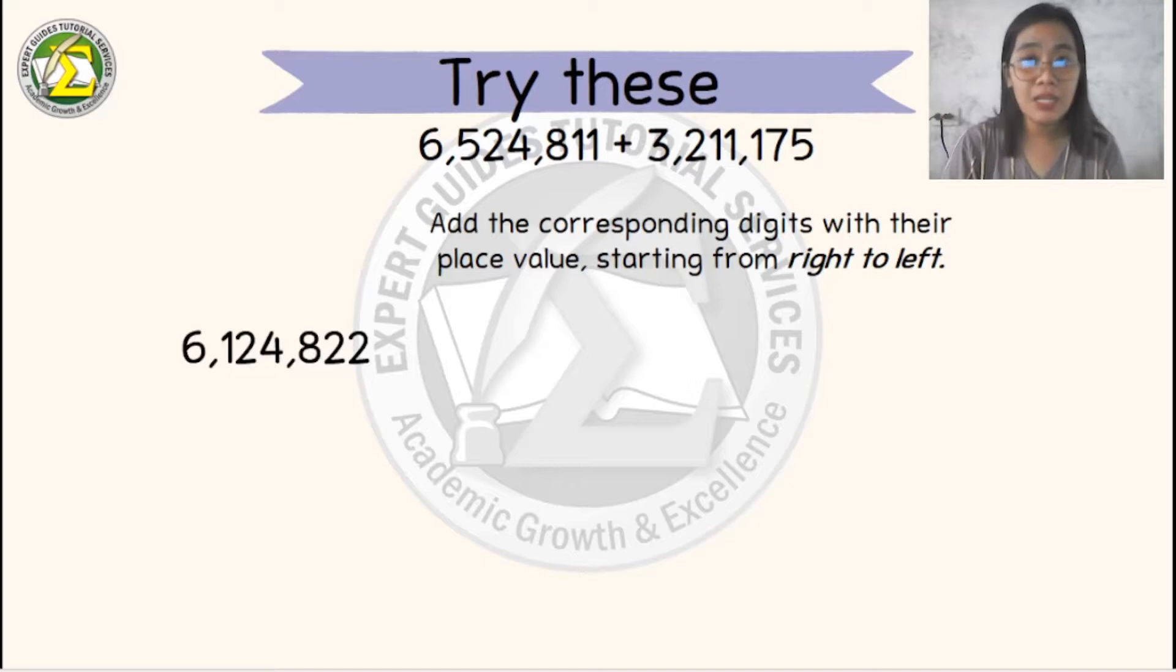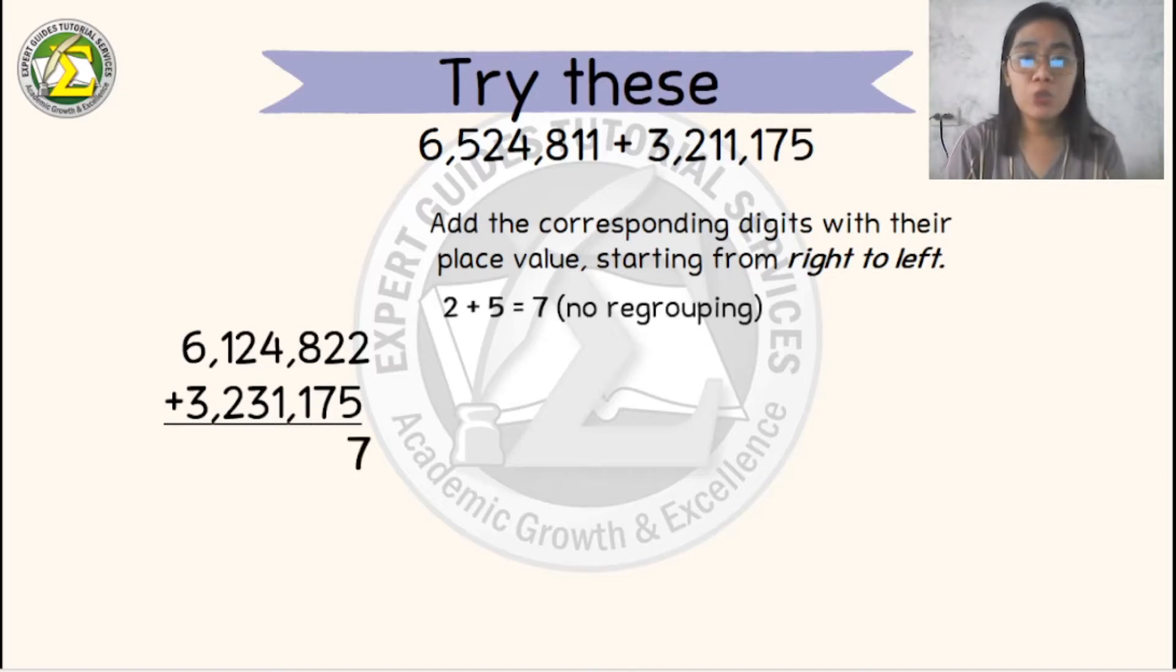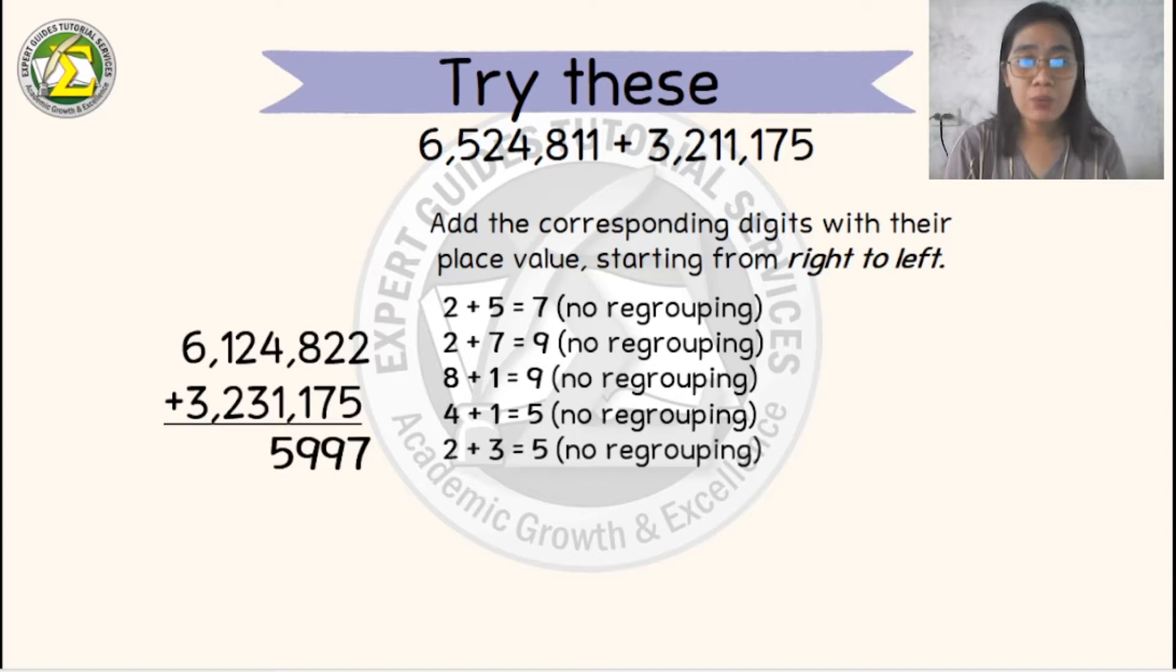Let's try another one. If we have 6,124,822 plus 3,231,175, you can pause this video and try it on your paper. So let's add the corresponding digits with their place values starting from right to left. So let's start with 2 plus 5 will become 7, 2 plus 7 will become 9, 8 plus 1 will become 9, 4 plus 1 will become 5, 2 plus 3 will become 5, 1 plus 2 will become 3, and 6 plus 3 will become 9.